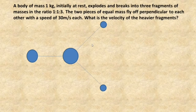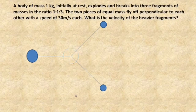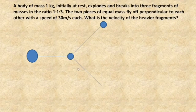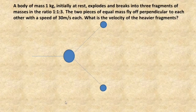Let's discuss this question in detail. When the one kilogram mass explodes, one fragment is going in this direction, another one is going in this direction making an angle of 90 degrees, and the third fragment is going in this direction. We are going to apply the law of conservation of momentum.